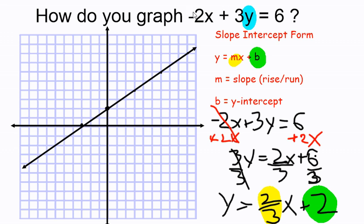All of the x and y values which make negative 2x plus 3y equals 6 true are represented by the ordered pairs on this graph. We have successfully graphed our linear equation by first putting it into slope-intercept form.